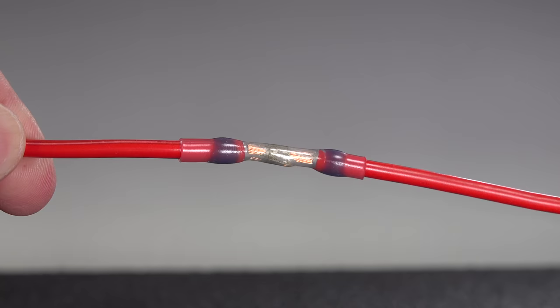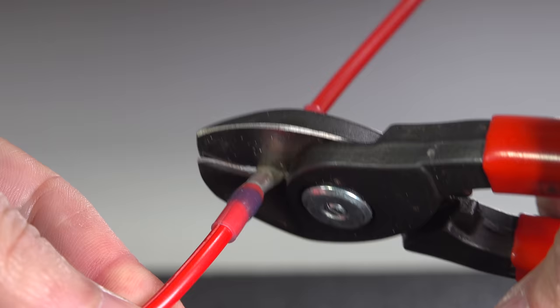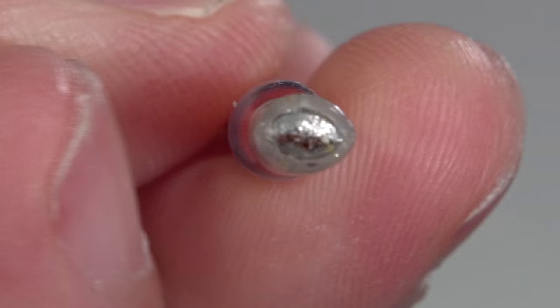But what is that solder actually doing? I wanted to see how well it would penetrate the wires, so I went ahead and cut the wire in the middle to take a look. You can see the solder is heavily melted in the center, which is definitely going to give you a better connection.